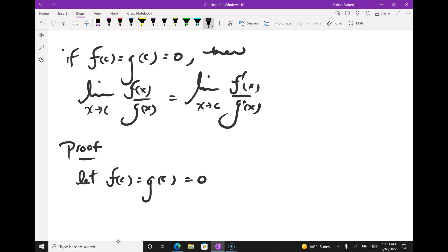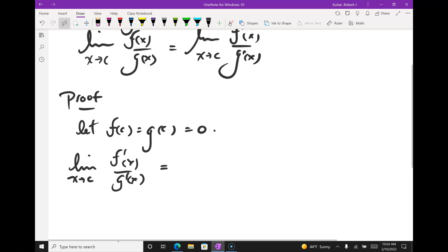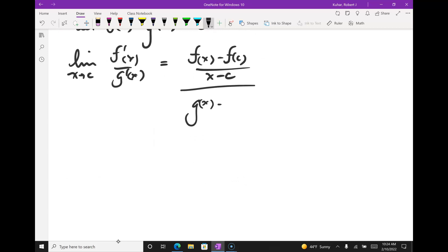Same thing here. I'm going to let these two functions at c be zero. And I'm going to start with the limit of f prime of x over g prime of x. I know those limits. I know the limit of f prime of x is f of x minus f of c over x minus c. And g prime of x is g of x minus g of c all over x minus c.